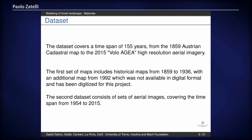We have been able to cover 155 years, from an old cadastre map to a recent aerial image. The last image is from 2015, and as new images become available, we can add new maps. We have basically two sets of maps: the first is the historical maps, processed from 1859 to 1936, plus an additional more recent map processed the same way since it is not available in digital form. Then we have a series of aerial images from 1954 to 2015.